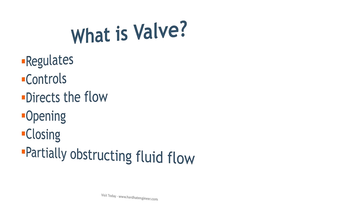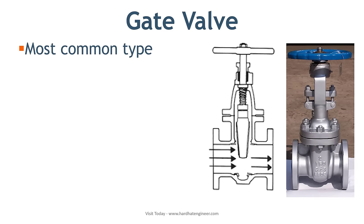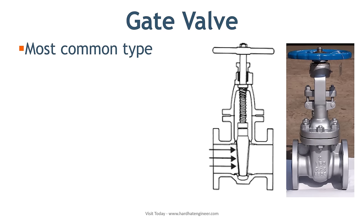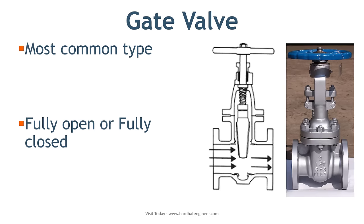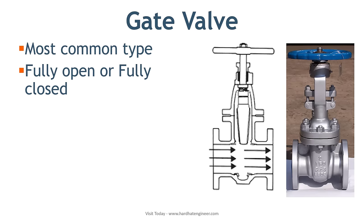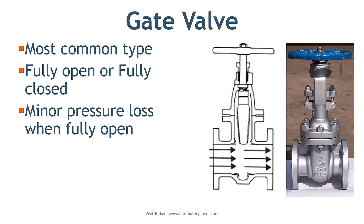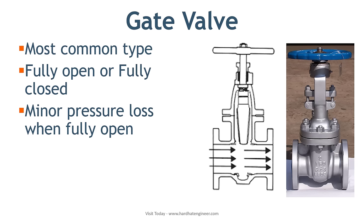Let's start with gate valve. Gate valve is the most common type of valve in any process plant. It is a linear motion valve used to start or stop the fluid flow. In service, these valves are either fully open or fully closed position.